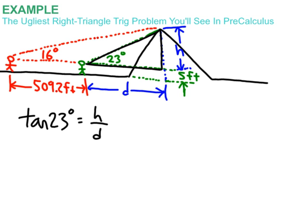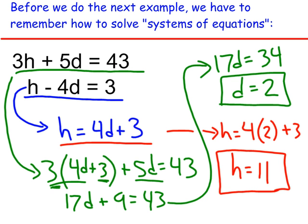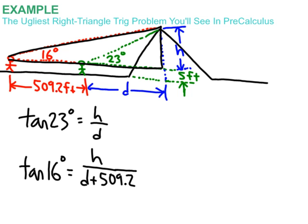Let's now look at the other right triangle, the bigger one. And we'll write a similar equation. But this time, the equation is tangent of 16 degrees equals h over d plus 509.2 feet. So those are our two equations. And this is why we reviewed this substitution method. It's because we're going to have to use that method to solve for these variables.